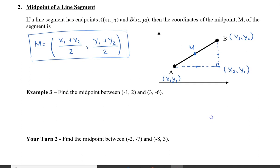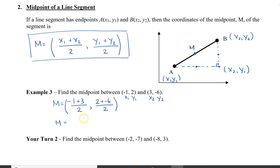Let's take a look at one example: find the midpoint between these two points. We'll relabel them: X1, Y1, X2, Y2. We're going to take negative 1 plus 3 and divide that by 2. Same with our Y values: 2 plus negative 6, divided by 2. So our midpoint between these two points will be 1 and negative 2. And that's how you find the midpoint of a line segment.